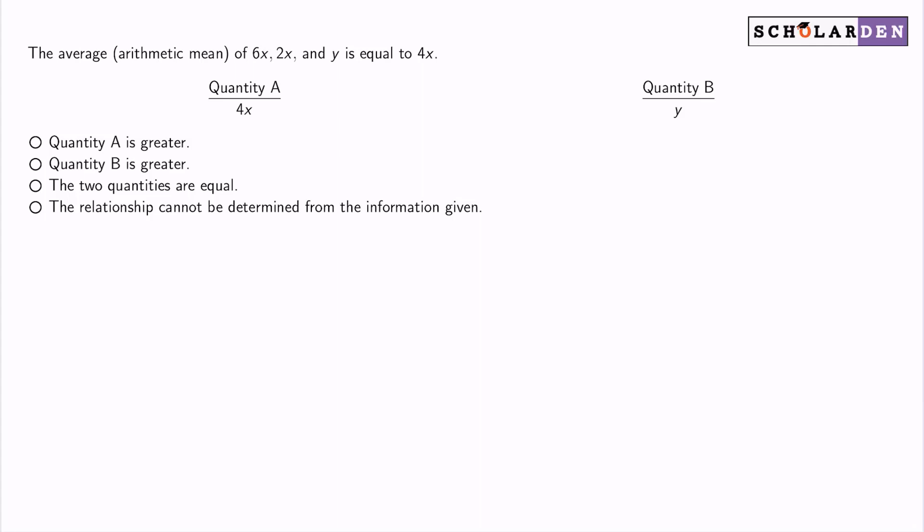Hey, everybody. The average or arithmetic mean of 6x, 2x, and y is equal to 4x. So now we want to quantitatively compare A and B, whether one is greater than the other, they're equal, or you just can't determine the relationship with the information given.